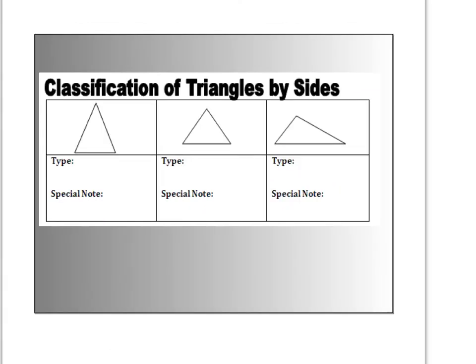Moving on — let's now talk about classifying triangles by their sides. On the first triangle, put double tick mark, double tick mark, single tick mark. On the next one, put three single tick marks. And on the third one, put a single, a double, and a triple. Then pause the video and see if you can remember what types of triangles these are based on their sides.